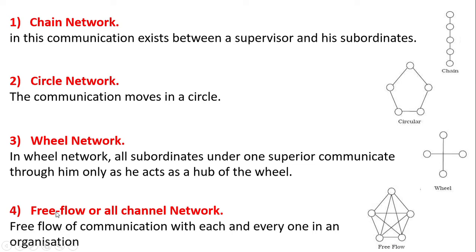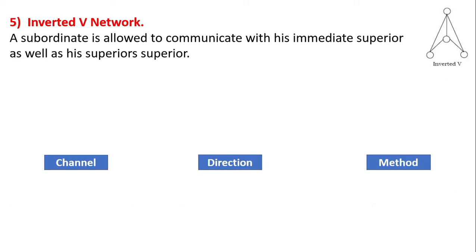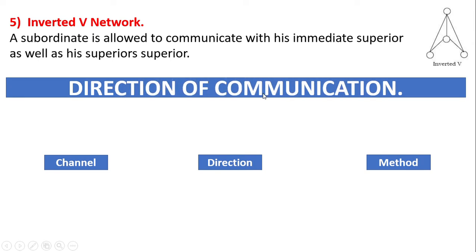The fourth type is the free flow or all-channel network, where you can communicate freely with anyone. The last type is the inverted V network, where subordinates are allowed to communicate with their superior's superior as well.